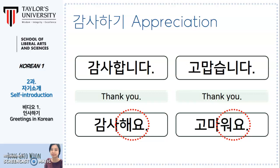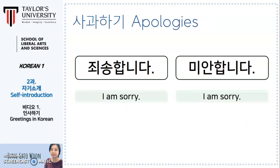If you accidentally step on someone's feet, what would you say? We need to say sorry. These two expressions mean 'I'm sorry' in Korean: 죄송합니다 and 미안합니다. This vowel in the first syllable — 죄 — was one of the weh sounds. There were three weh sounds, and the third one is 죄. 죄송합니다.